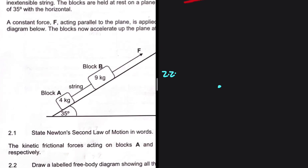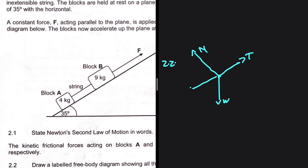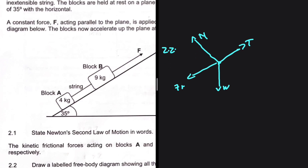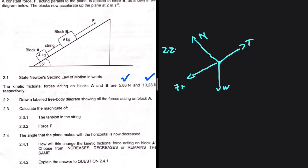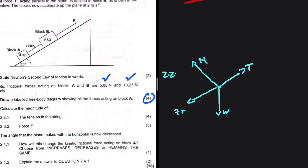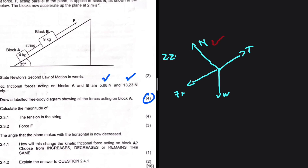Before we start, we have the weight — obviously. Block A is resting on a surface, so the surface will apply a normal force on the object. A and B are connected by a string, so there's a tension pointing up the incline. We also have the kinetic frictional force opposing the motion. The mark allocation is 4 and we have four forces on our free body diagram, so we are quite convinced that we have done the correct thing.